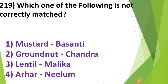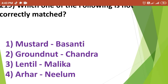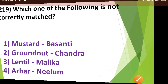Which one of the following is not correctly matched? Options include: Basanti — groundnut variety, Chandra — groundnut variety, Malika — lentil variety, Nilam — arhar variety. The pair which is not correctly matched is Option No. 4 — Arhar variety Nilam.